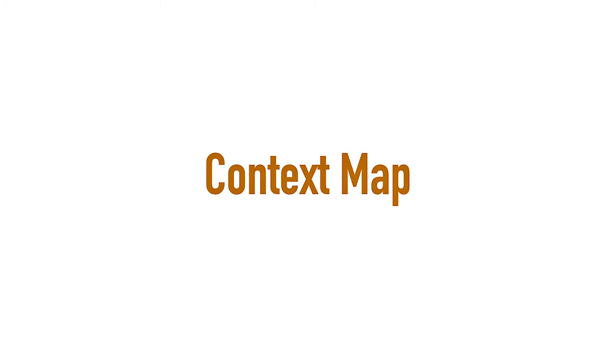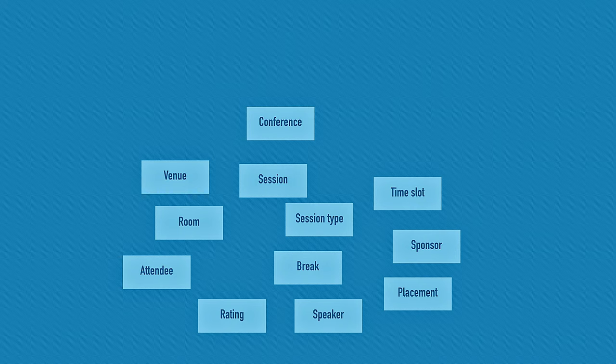Context mapping is the process of splitting up one domain model into multiple domain models. Let's take an example — imagine you want to create a conference management application. You start with a glossary of all the concepts and use the terms of that ubiquitous language. So you might have rooms, sessions, and attendees. And then the complicated part: try to split it up into the bounded contexts.